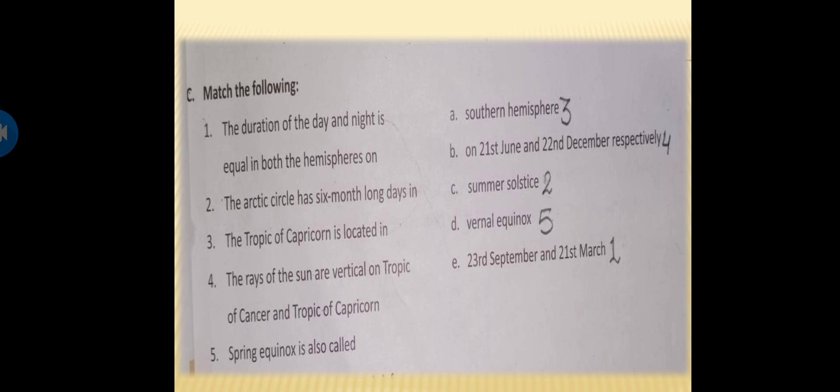Now come to question number 5. Spring equinox is also called vernal equinox. So we have completed C part also. And the series of the answer is 3, 4, 2, 5, 1. So now tomorrow we will discuss D part, E part and value based question. So today what you all have to do? Simply you have to write A, B and C part in the notebook. Thank you for watching.